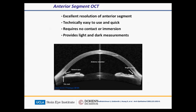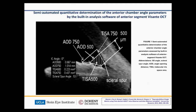Anterior segment OCT, as you're all aware, has excellent resolution of the anterior segment. It's very easy to use and quick compared to high frequency ultrasound or UBM, so it's really gained widespread use. Our group at Doheny was one of the first to describe the angle parameters that were first described with UBM and translate those over to OCT.